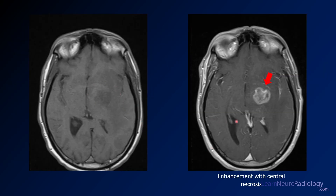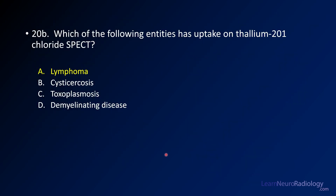On your pre-contrast and post-contrast, you see a peripherally enhancing lesion, maybe a little bit of central necrosis — that's more characteristic of lymphoma in an immunocompromised patient. Your differential still includes metastatic disease, infection, and glioblastoma particularly, so you've got to keep those in consideration. Lymphoma takes up thallium on a thallium scan, which can help you differentiate lymphoma from infections. That's sometimes used, or you might think about a treatment trial.